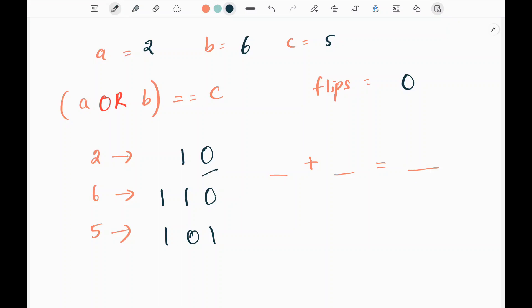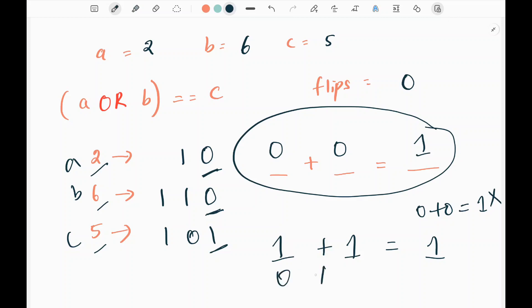So now I will pick the right most value from the binary representation. So 2, 6 are a and b and 5 is c. So we pick the right most value of a and b first that is 0 and 0 then c is 1. So what are the ways that I can flip a and b to make this equation valid? So in this case 0 plus 0 is not 1. So I can flip both a and b to make this equation valid that is 1 plus 1 is 1 in bitwise OR and there is also another case where I can flip either a or b, 0 plus 1 or 1 plus 0. Both will give me 1 as well.